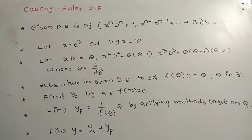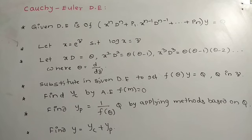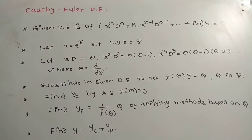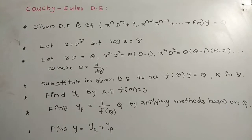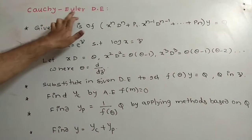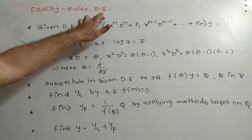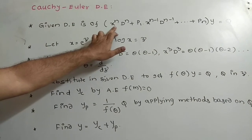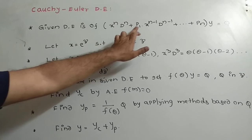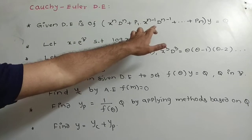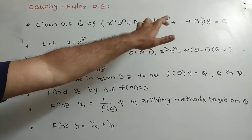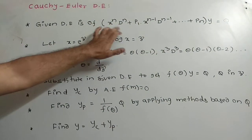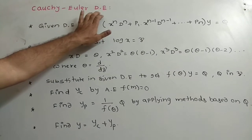Welcome back to Master's Academy of Mathematics. It is the next continuation problem in higher order ordinary differential equations. Let us think about the Cauchy-Euler differential equation. Any differential equation of the form x^n d^n + p1 x^(n-1) d^(n-1) + ... + pn of y equal to q is generally said to be a Cauchy-Euler differential equation.